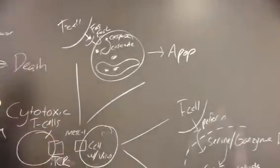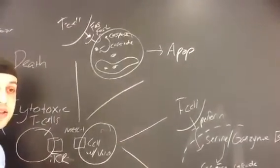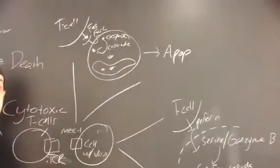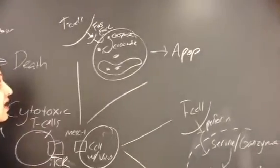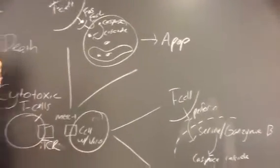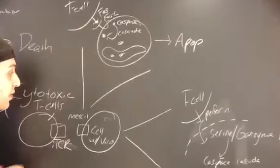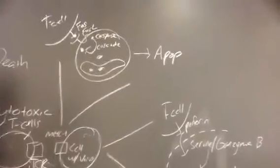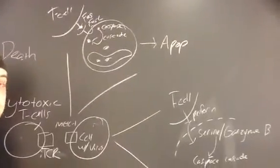And this caspase cascade is a bunch of proteases that essentially cleave each other and cause this large cascade. And then those proteases go into the cell and start destroying actual things that the cell needs to survive. And by doing that, it eventually causes apoptosis in the cell.